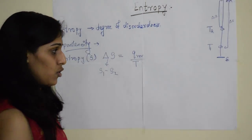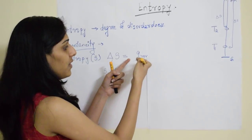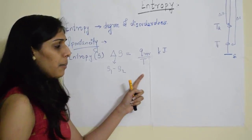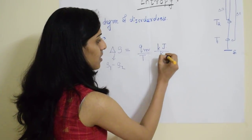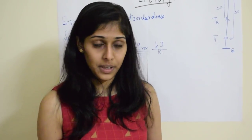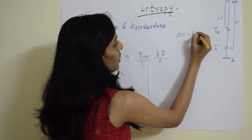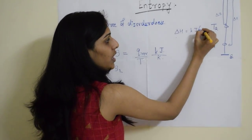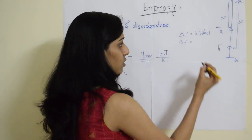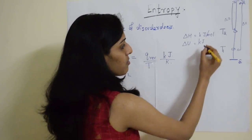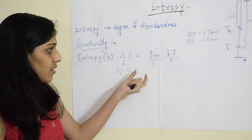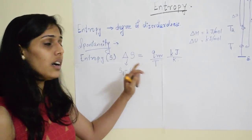Let us check the units for entropy. From the mathematical equation delta S equals Q reversible over T: Q is heat or energy, which has a unit of kilojoules, and temperature is in Kelvin. So delta S has a unit of kilojoules per Kelvin, which is different from delta H, which has a unit of kilojoules, or sometimes kilojoules per mole. Similarly, delta U, the internal energy, has units of kilojoules or kilojoules per mole. The distinguishing factor for entropy is the temperature value in the denominator.